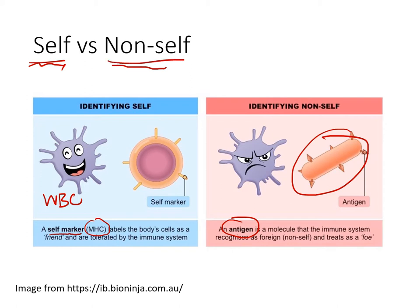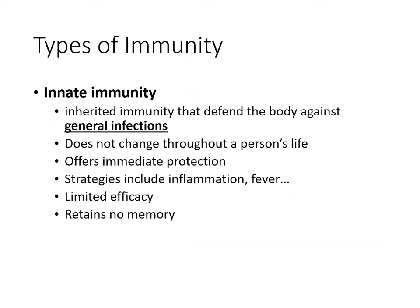Having the ability to distinguish what belongs to self and what does not is a key characteristic of the immune system. You don't want to attack the wrong thing. If you're not able to tell your own cells apart and start attacking them, you might have what we call autoimmune diseases — things like lupus and multiple sclerosis.